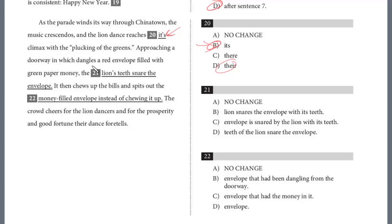Approaching a doorway in which dangles a red envelope filled with green paper money, the lion's teeth snare the envelope. For 21, you want to think about this. Are the teeth actually snaring it or does the lion snare it by using his teeth? This doesn't really make sense. It's not the teeth that snare it. It's the lion snaring it with his teeth, right? And so the answer here is B for number 21.